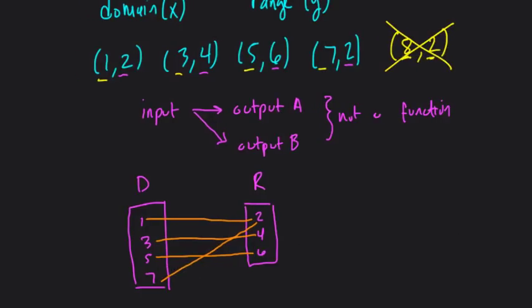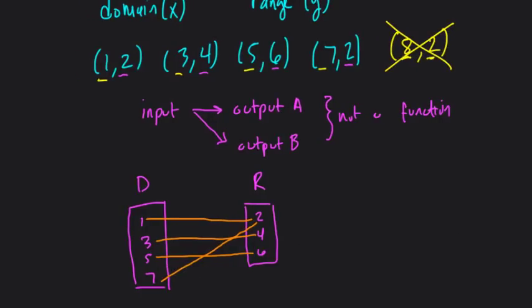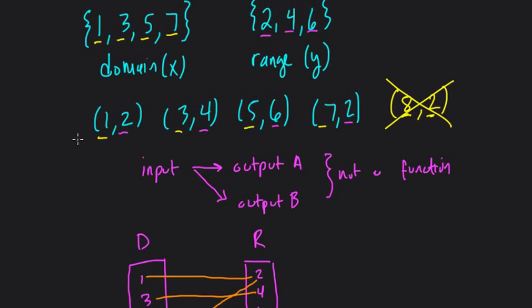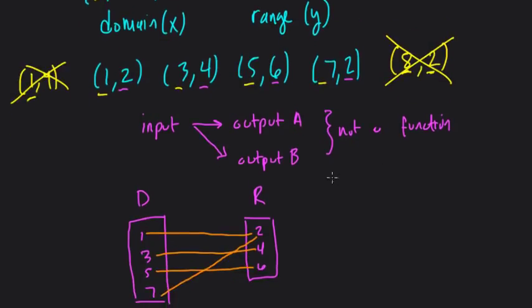So those are things to look for. If they use inputs and outputs that don't exist, right? If they have an input that goes to two outputs, you would see another point, maybe like (1,4). In this case, 1 would map to 4, and 1 would map to 2. That would mean one input's going to one other output, and that would not be a function.